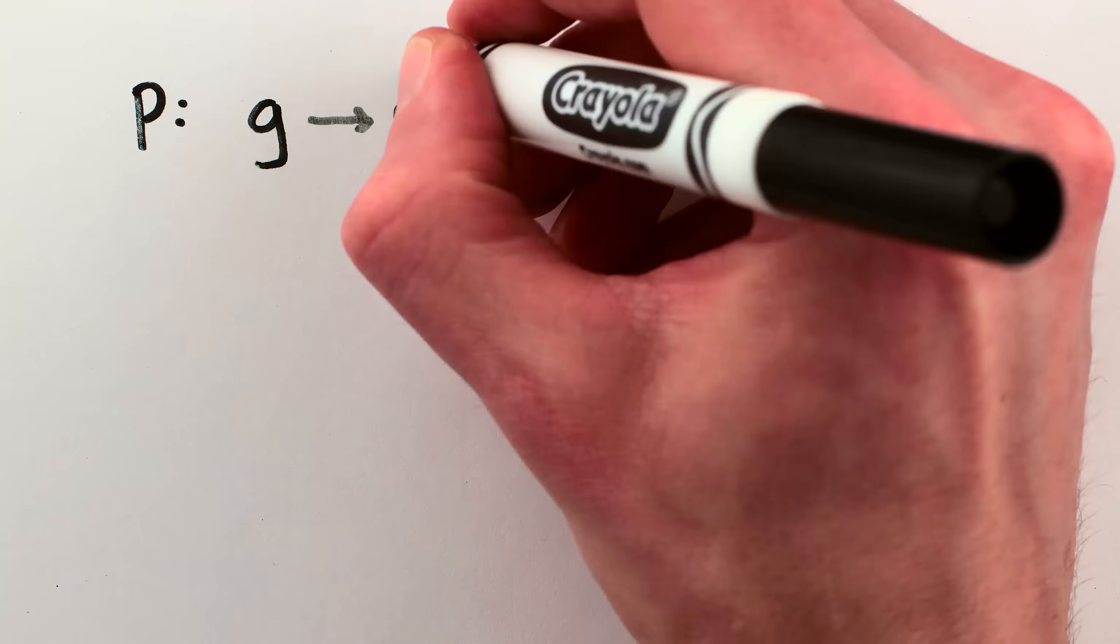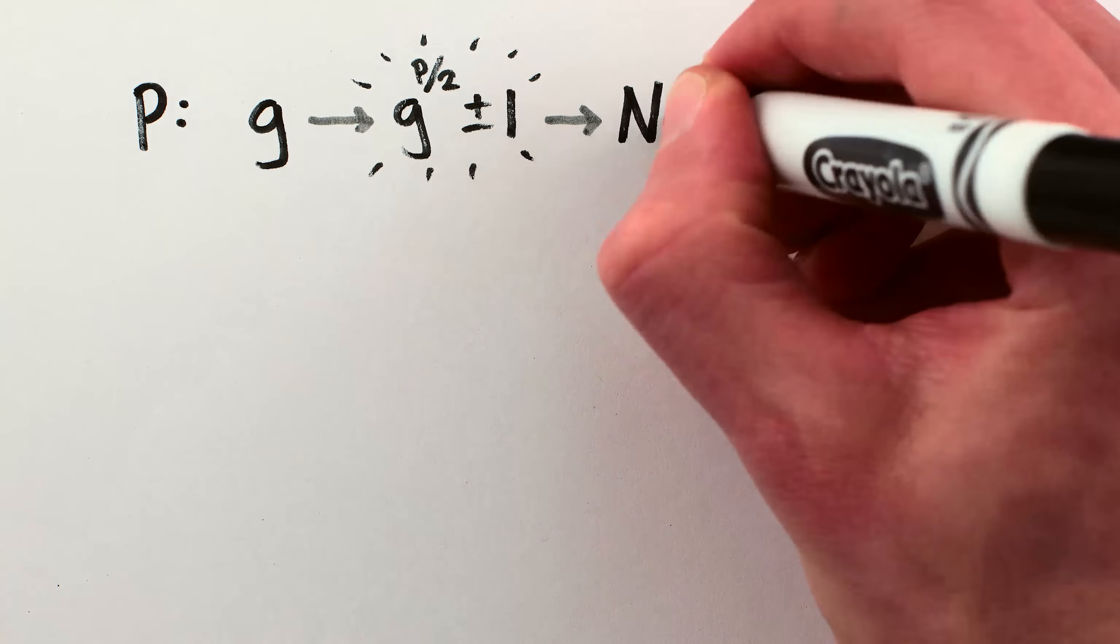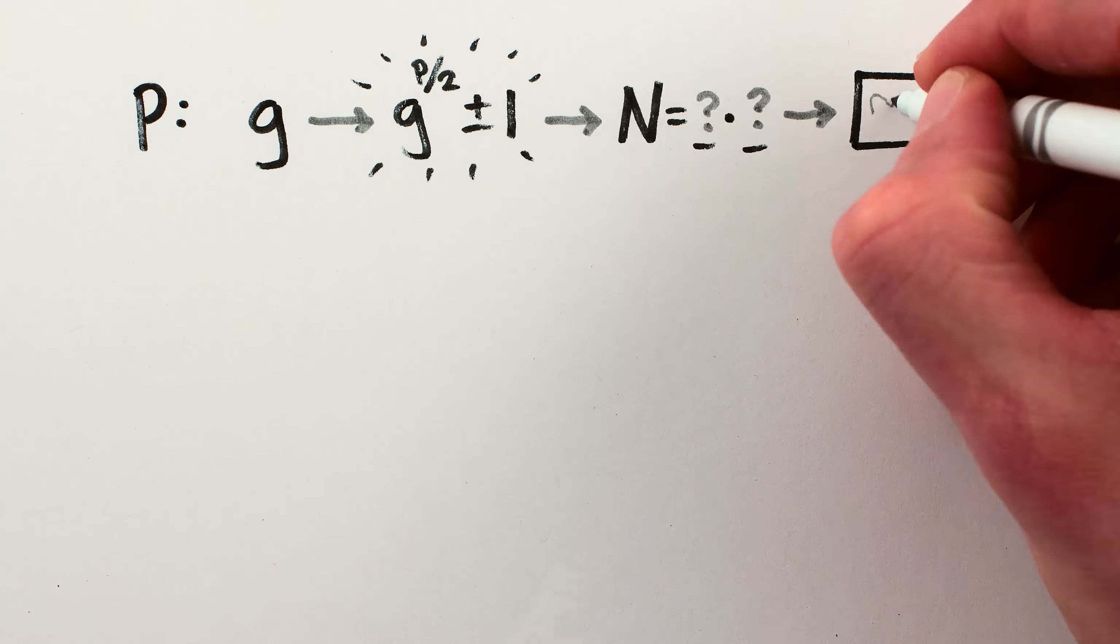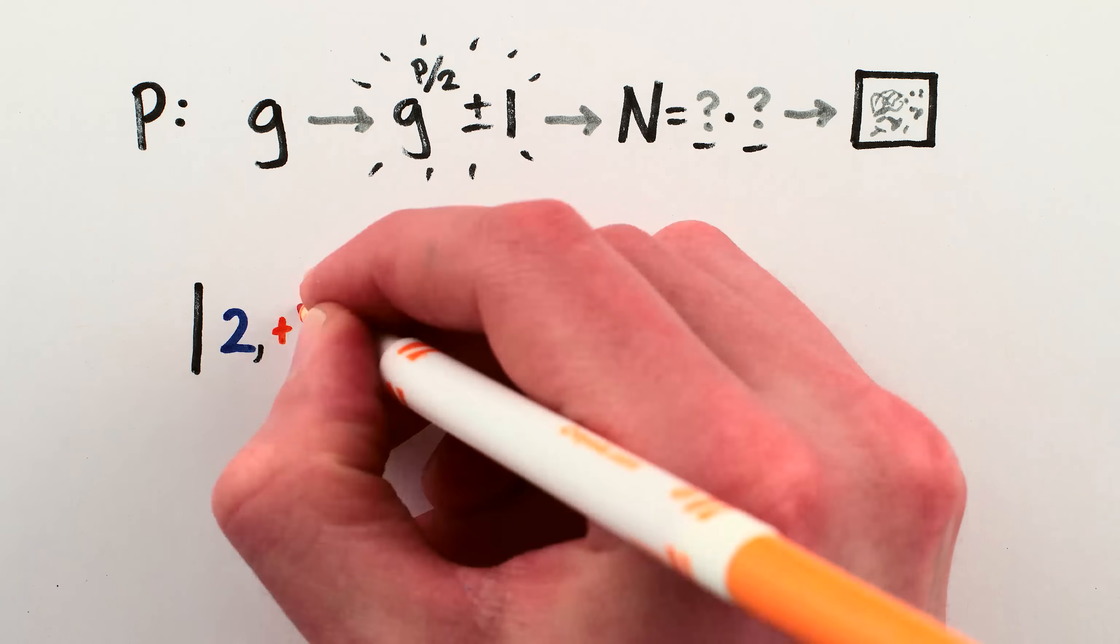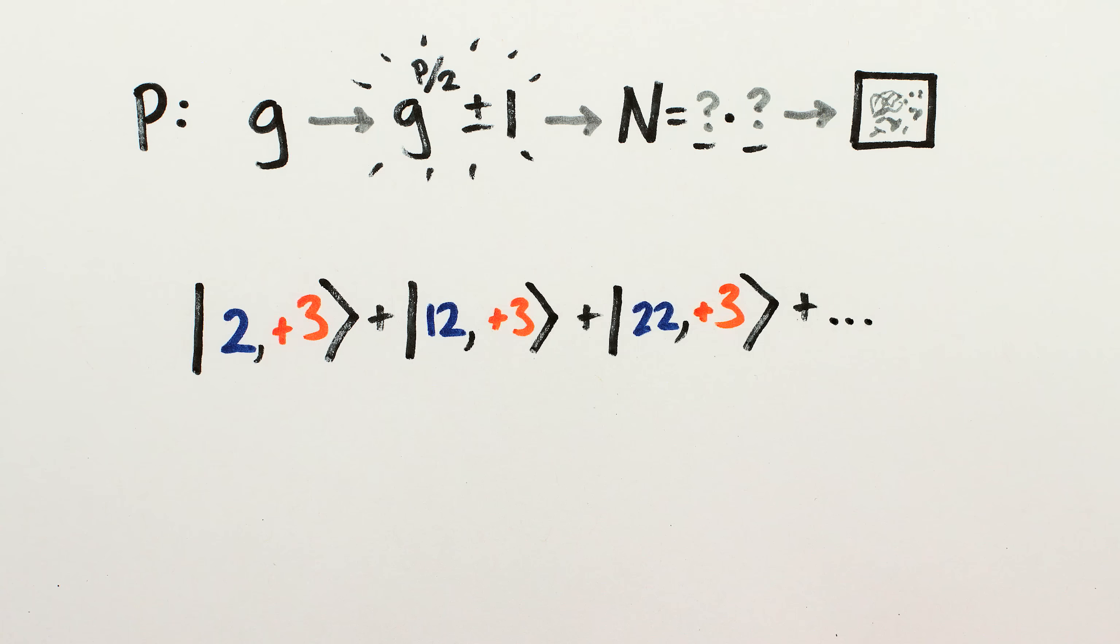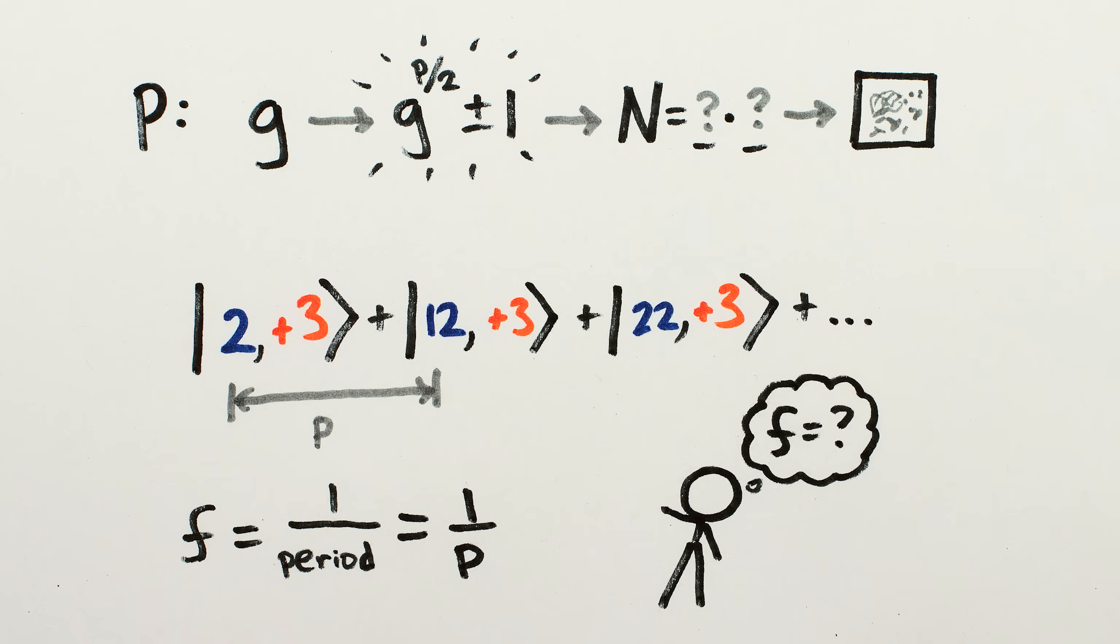To recap, we're trying to find P because it will allow us to turn our crappy guess into a good guess for a number that shares factors with n, which will allow us to break the encryption. And we now have a quantum superposition of numbers that repeat periodically with a period of P, or equivalently, they repeat with a frequency of 1 over P. If we can find the frequency, we can find P and break the encryption.